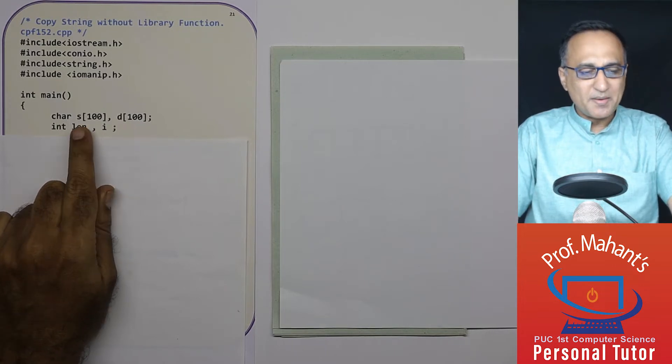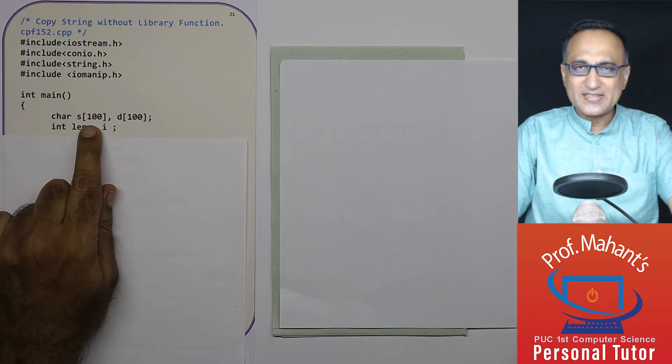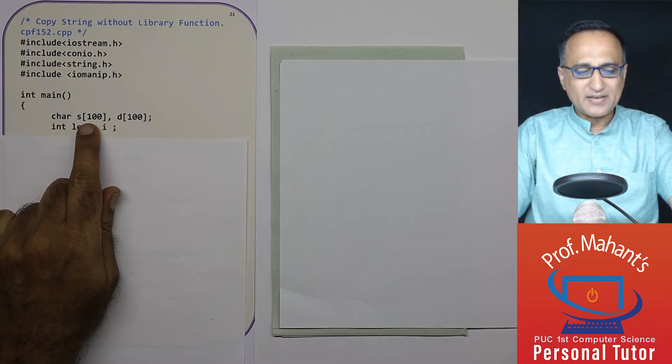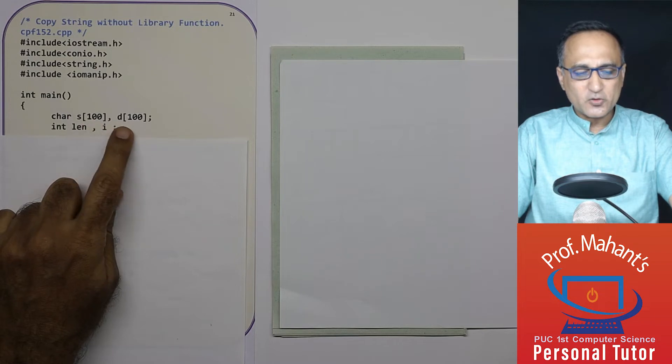What I am going to do here is I am going to read a string into s and then character by character I am going to copy it into d. This explanation is going to show you how the copying one character at a time takes place from s to d.